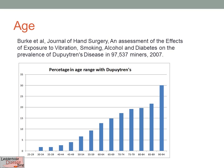Age is the last risk factor to cover. As we all age, our chances of having Dupuytren's increase. One paper looked at smoking, vibrations, alcohol, and diabetes in nearly 100,000 people. A bar chart clearly shows increasing risk with age: from 0% in the 25-29 age group, 2% in 30-34, 2% in 35-39, 3% in 40-44, 4% in 45-49, 6% in 50-54, and continuing to rise through the decades.